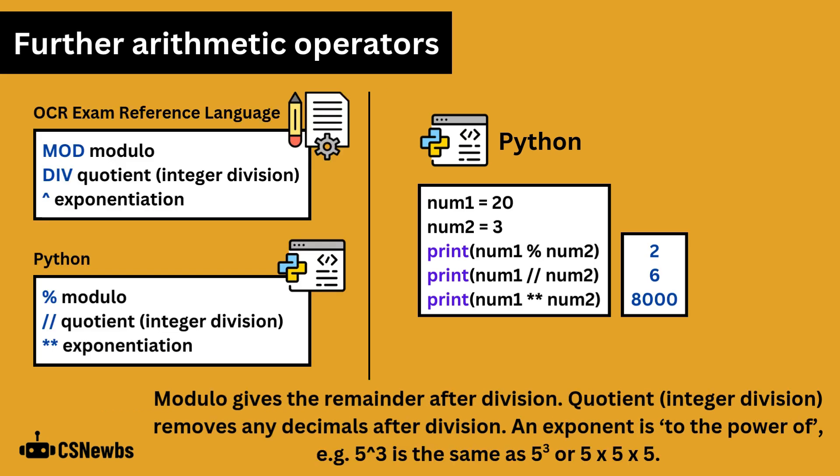There are three more complex arithmetic operators that you need to know. Modulo gives the remainder after division, quotient or integer division removes any decimals after division, and an exponent is to the power of. For example, 5 up arrow 3 is the same as 5 to the power of 3 or 5 times 5 times 5.